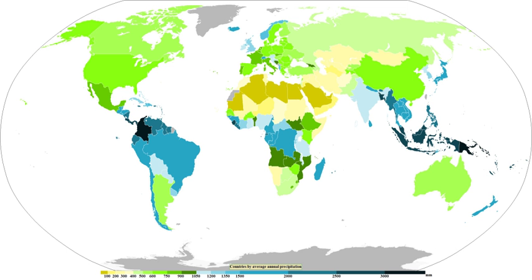Stratus can also form due to the lifting of advection fog during breezy conditions. There are four main mechanisms for cooling the air to its dew point: adiabatic cooling, conductive cooling, radiational cooling, and evaporative cooling. Adiabatic cooling occurs when air rises and expands. The air can rise due to convection, large-scale atmospheric motions, or a physical barrier such as a mountain.